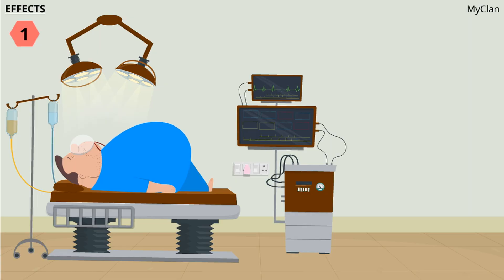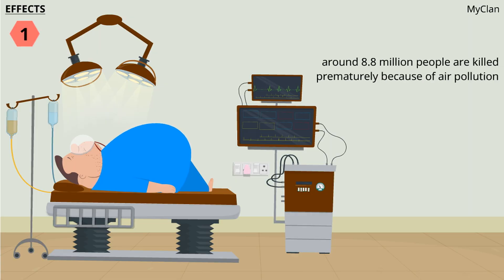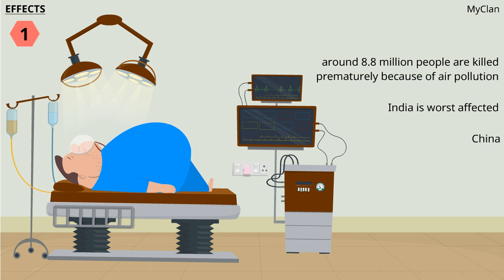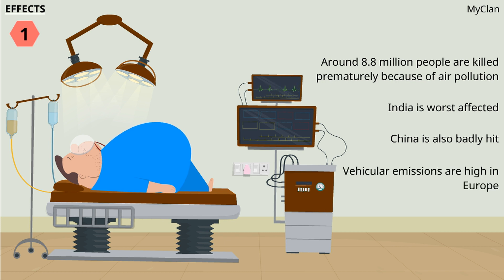It is estimated by the World Health Organization that every year more than around 8.8 million people are killed prematurely because of air pollution. India has the highest deaths from air pollution and also from asthma. China is also badly hit because of increasing air pollution levels. Most deaths in Europe are caused because of nitrogen dioxide and other nitrogen oxides emitted by vehicles.